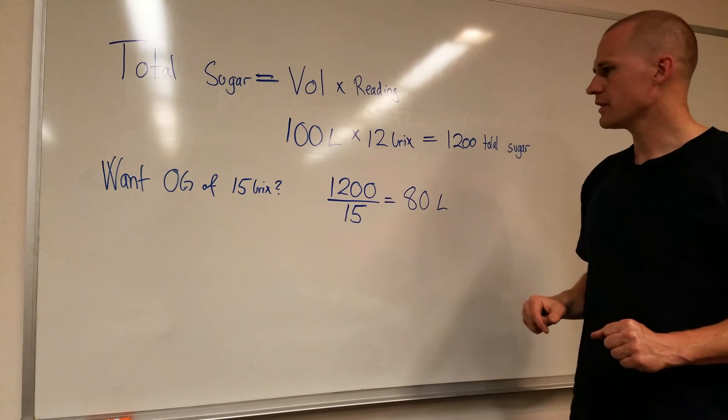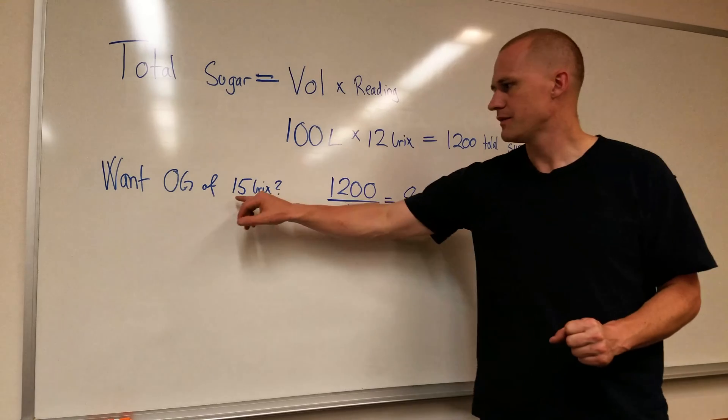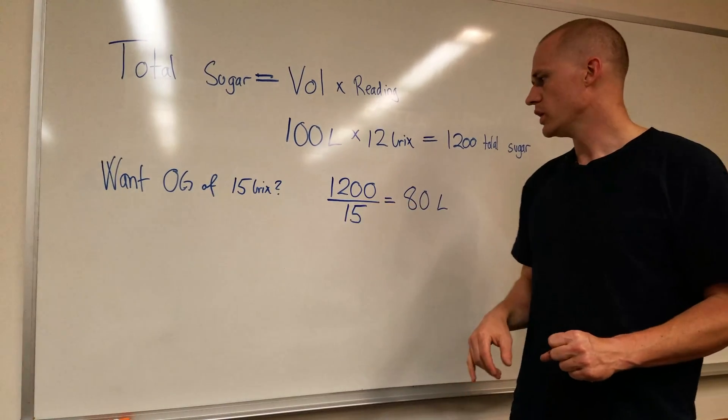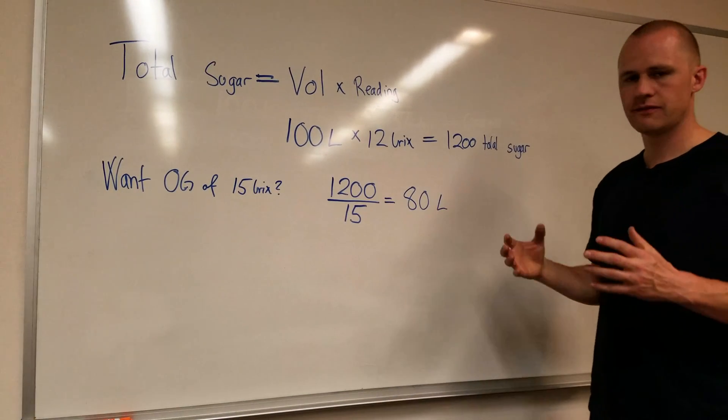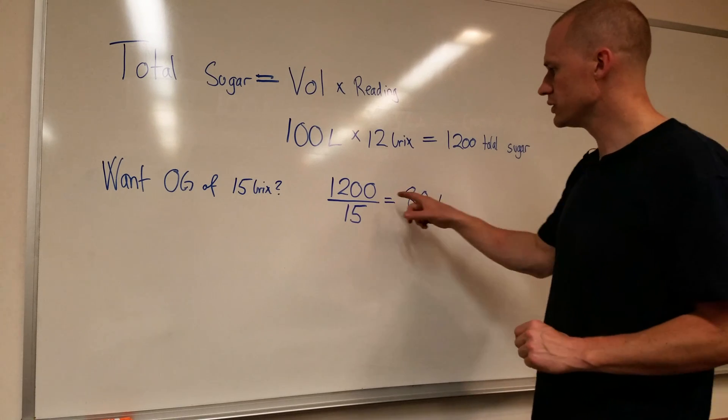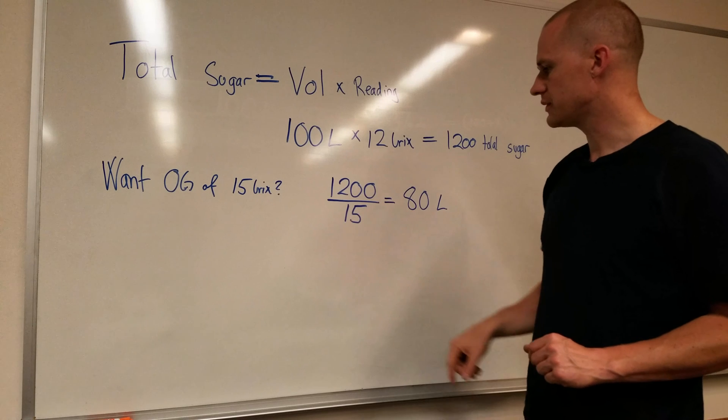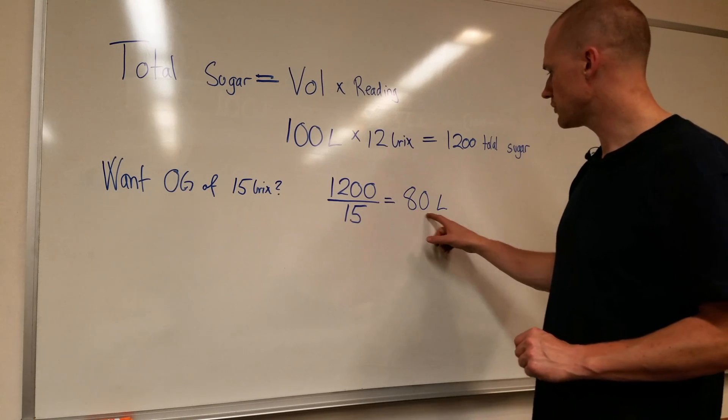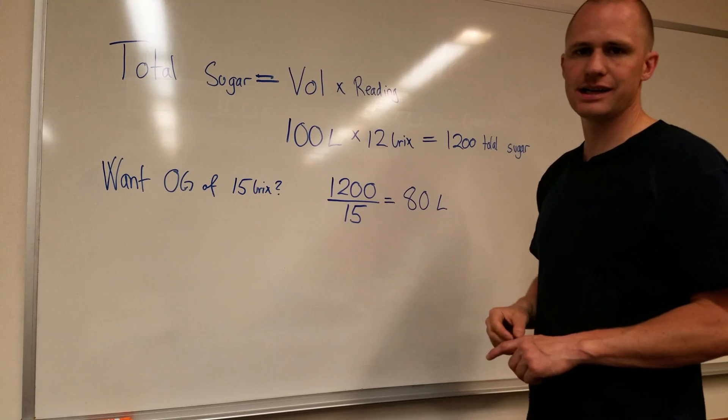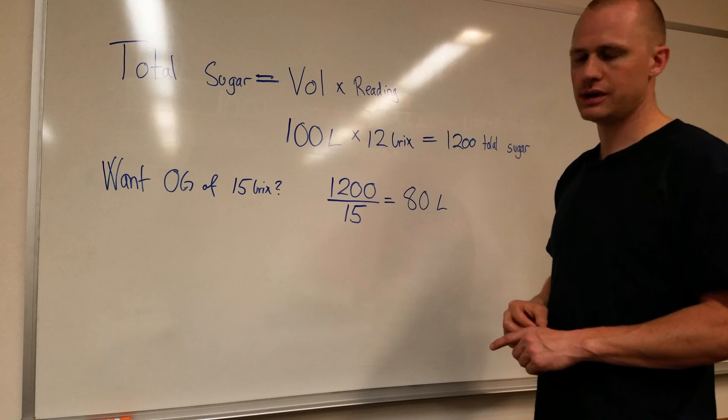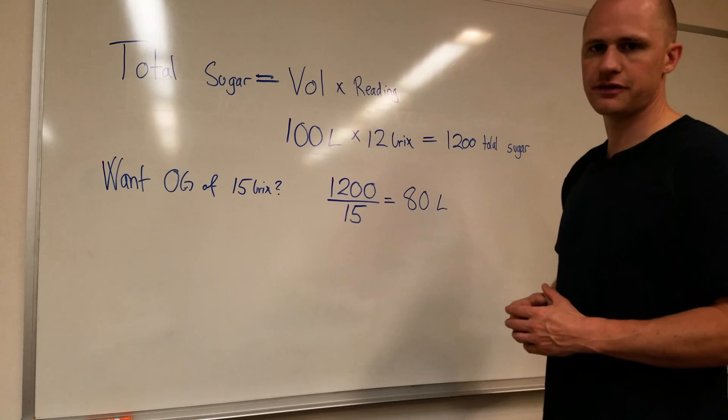If we wanted to end up at 15 bricks, what would be our final volume? All you have to do is take that total sugar and divide it into what you want it to be, 15, and it will tell you, you need to get to 80 liters to get a 15 bricks reading.